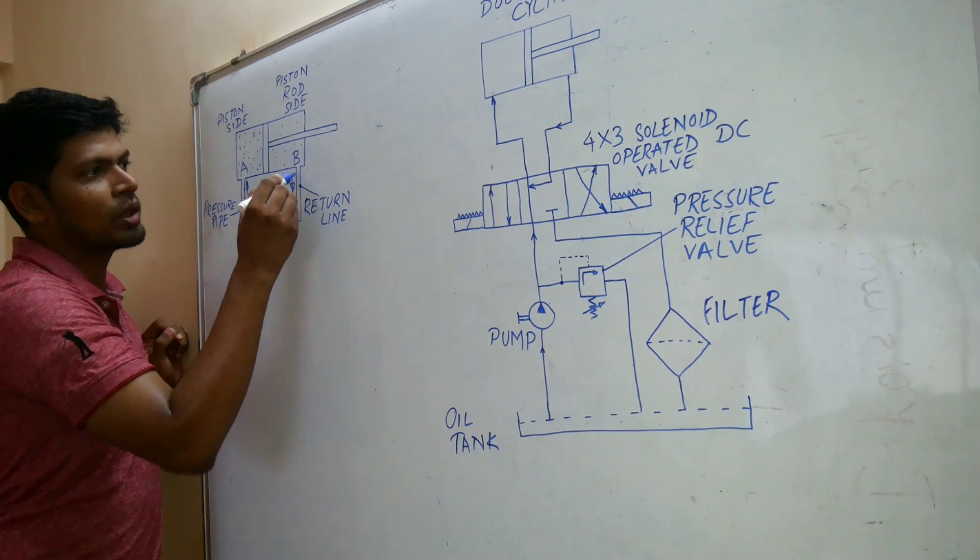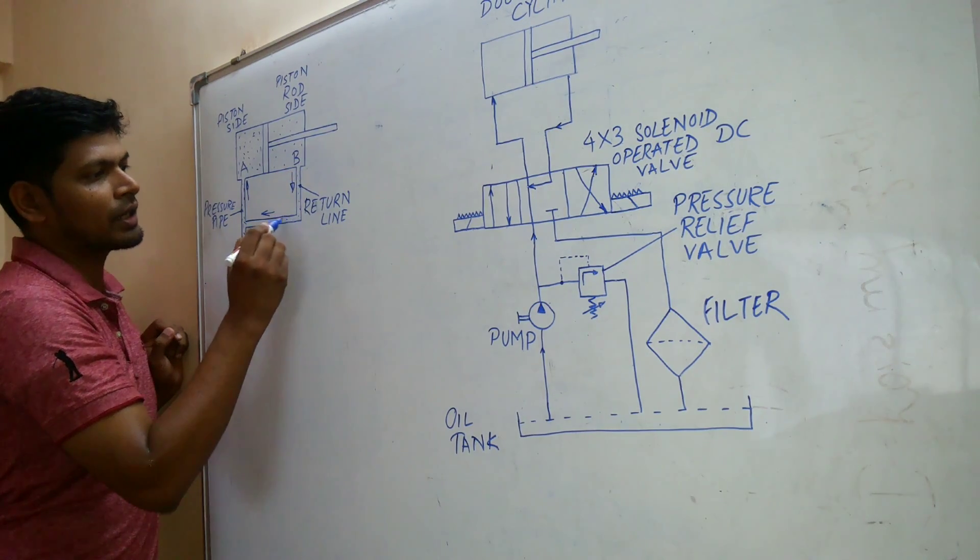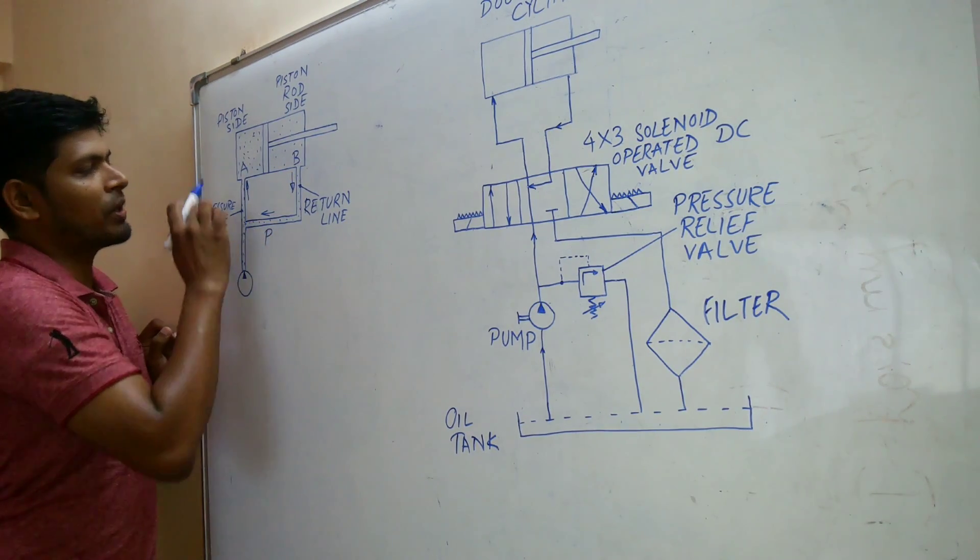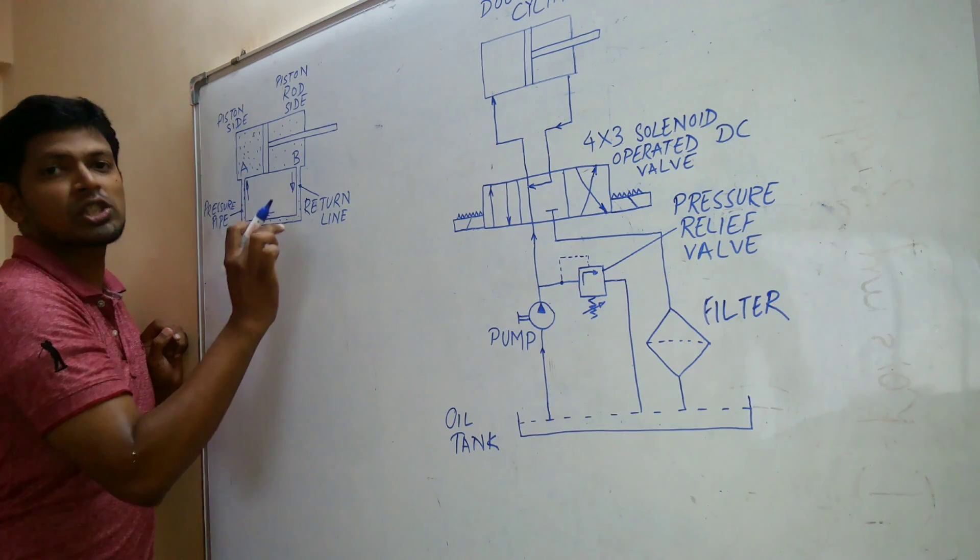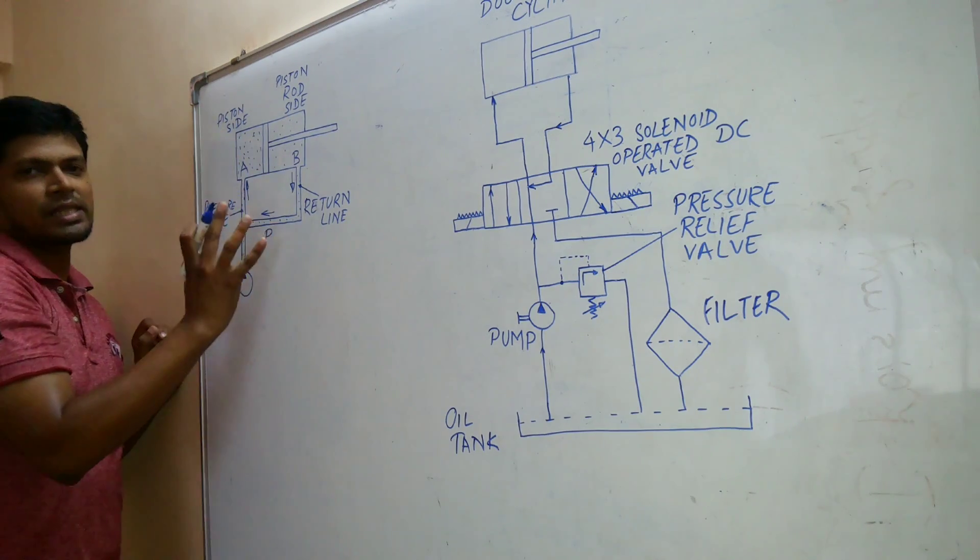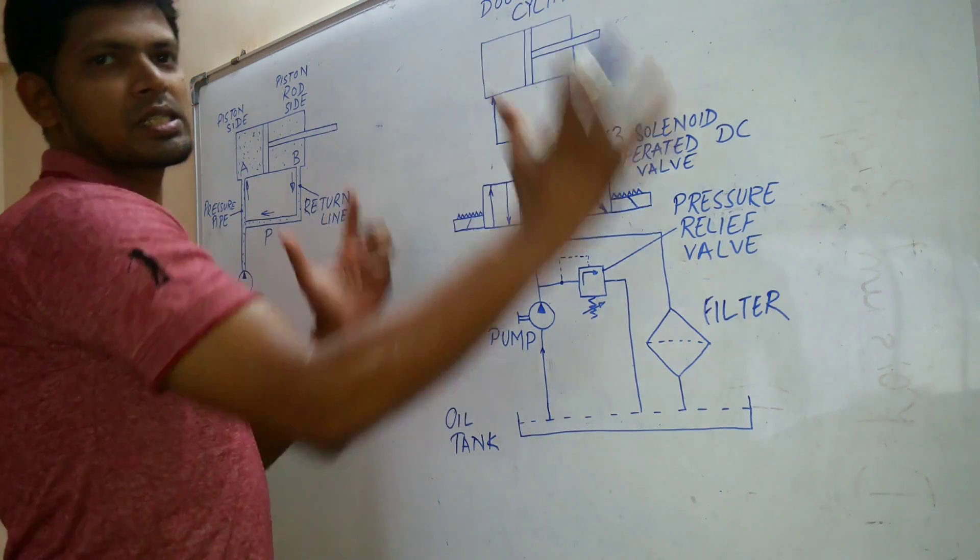Instead of wasting, what we will do is through the return line we will connect it to the pressure line so that energy is not wasted and it is utilized. Let us see it in a circuit type.